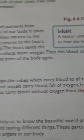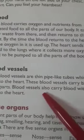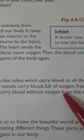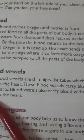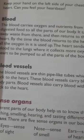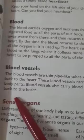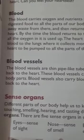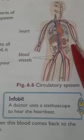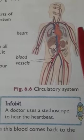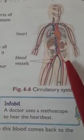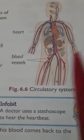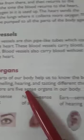Blood vessels are thin, pipe-like tubes that carry blood to all parts of our body and back to the heart. They carry oxygen-rich blood from the heart to the body parts, and also carry blood without oxygen from the body parts back to the heart. Purified blood is sent to all parts of the body, and the blood not carrying oxygen returns to the heart. This is our circulatory system.